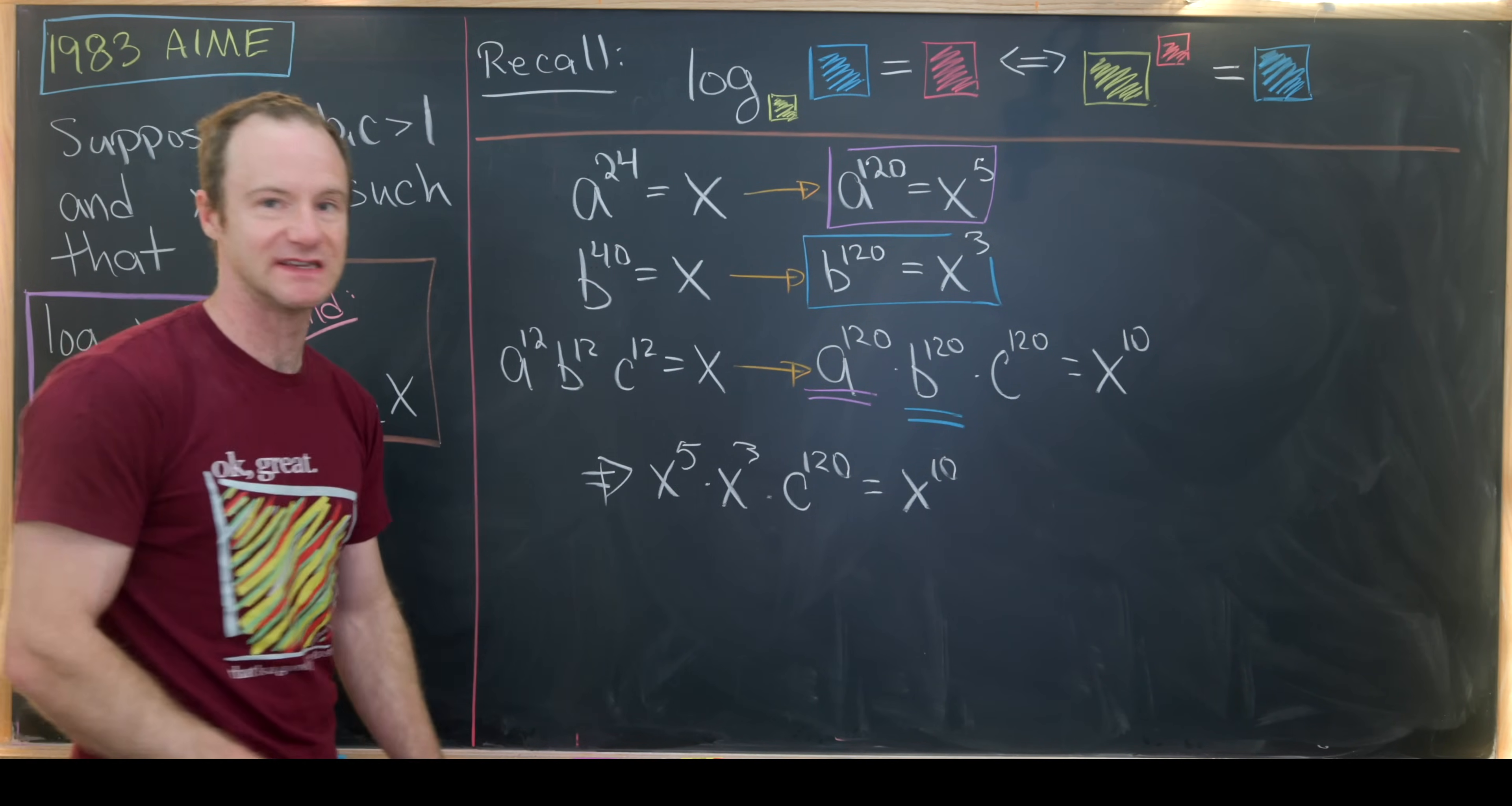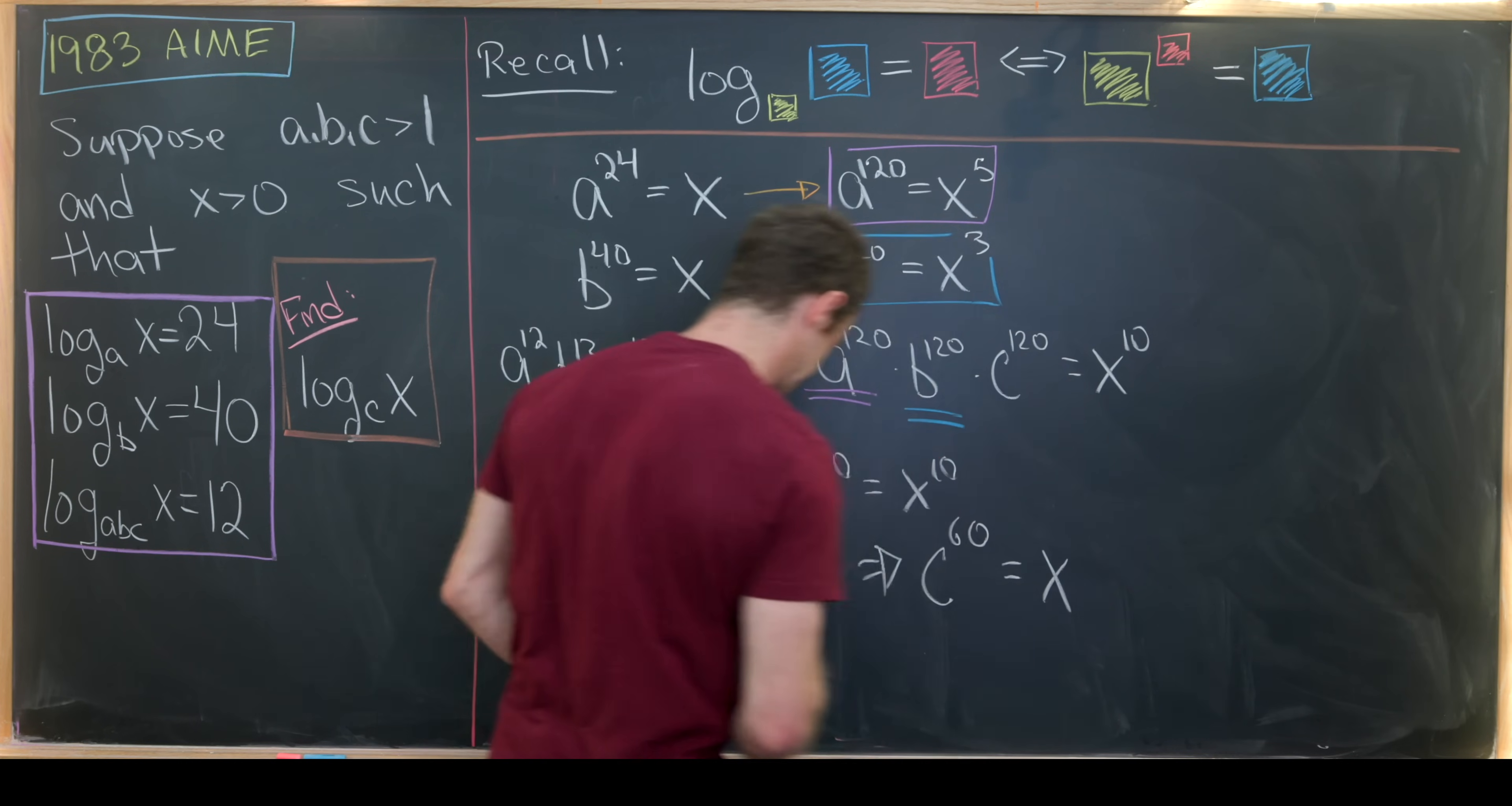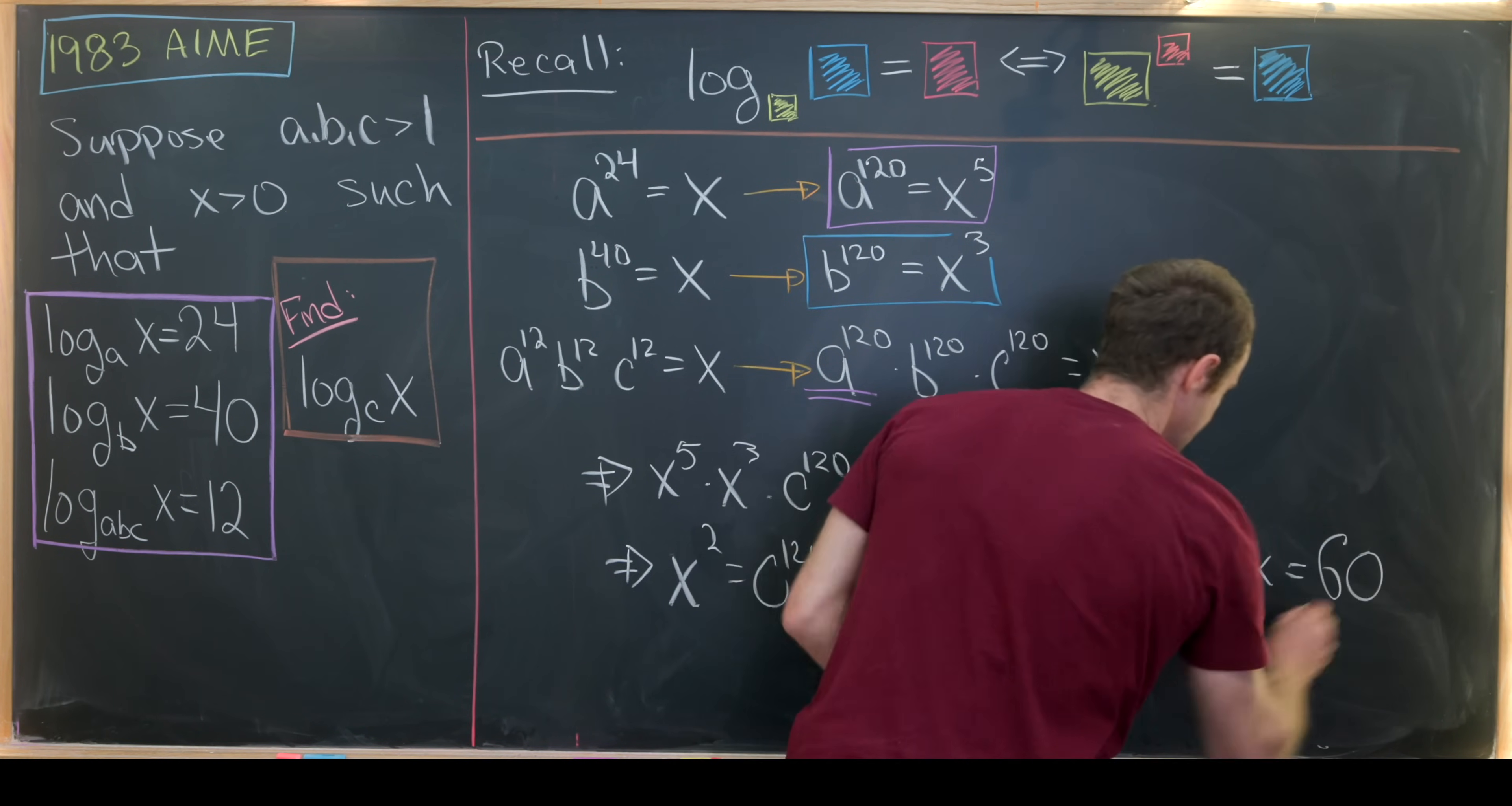Dividing that over, we're allowed to divide that over because X is not equal to 0. We'll get X squared equals C to the 120. In other words, we have C to the 60 equals X, kind of putting things in a slightly different order. But that's an exponential version of a logarithmic equation exactly related to this.